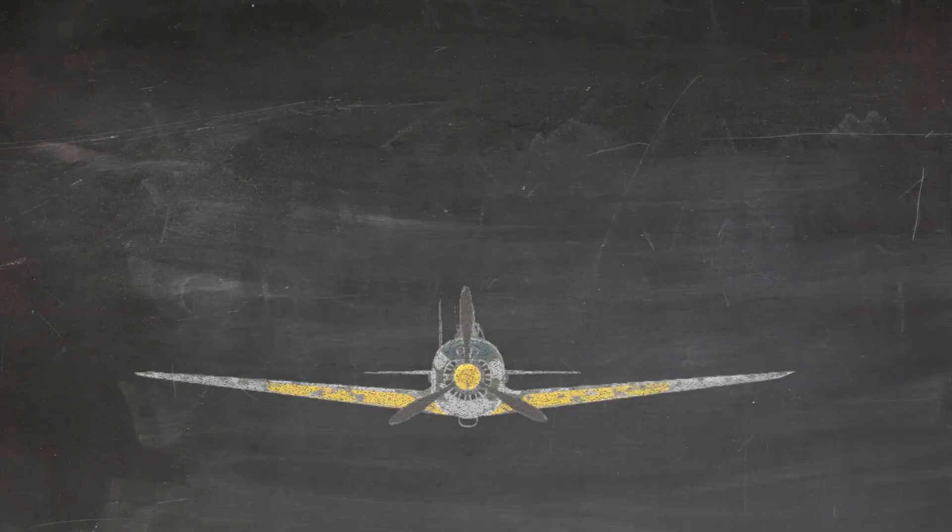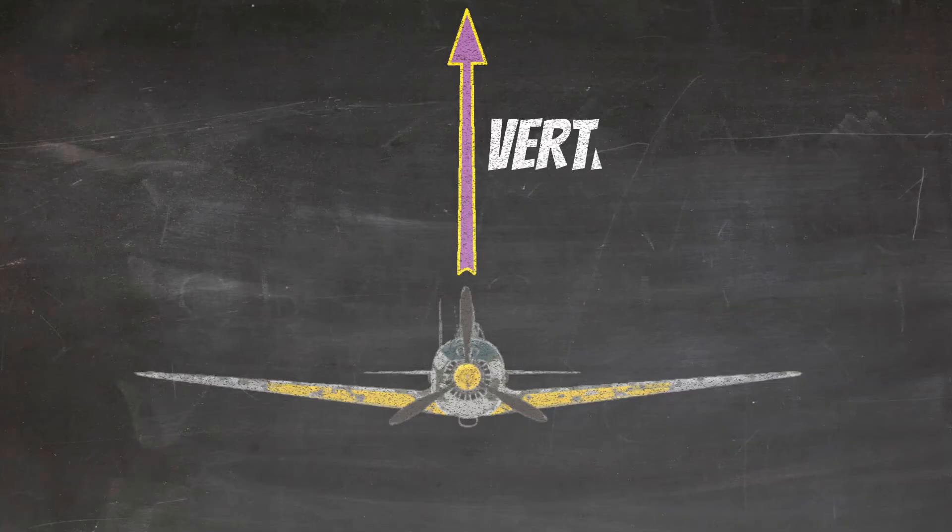Anytime our airplane is in straight and level flight, any lift that's produced will be straight up and down. We call this vertical lift.